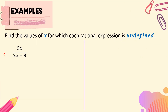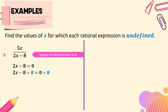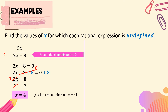For number 2, we have 5x all over 2x minus 8. We equate the denominator to 0: 2x minus 8 equals 0. Adding 8 to both sides gives 2x equals 8, then dividing both sides by 2 gives x equals 4. So the domain of x is any real number except x equals 4.